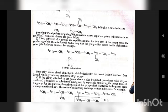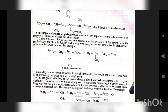If the group attached to the parent chain is also branched (sometimes called a complex substituent), it is named as a substituted alkyl group by separately numbering the carbon atoms of that group. The carbon atom of this group which is attached to the parent chain is always numbered as one, and the name of such a group is written in brackets. For deciding alphabetical order, the complete name of the complex substituent including prefixes such as di- and tri- (forming part of the name) is considered.